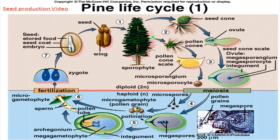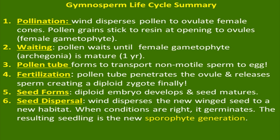Once conditions are right, the sporophyte begins to grow and make a small tree. In summary, the gymnosperm life cycle: one, pollination — wind disperses pollen to ovulate female cones; pollen grains stick to the resin at the opening to the ovules where the female gametophyte is. Two, the pollen waits until the female gametophyte, the archegonia, is mature at one year. Three, the pollen tube forms to transport the non-motile sperm to the egg. Four, fertilization: the pollen tube penetrates the ovule and releases the sperm, creating a diploid zygote. Five, seed forms: the diploid embryo develops and the seed matures. Six, seed dispersal: wind disperses the winged seeds to a new habitat, or animals eat them like the crossbill. When conditions are right, it germinates, and the resulting seedling is a new sporophyte generation.